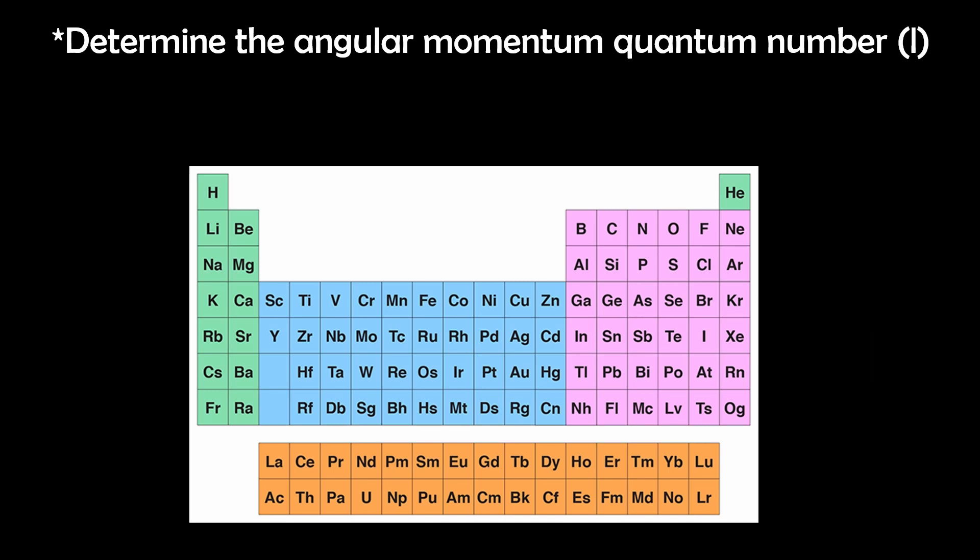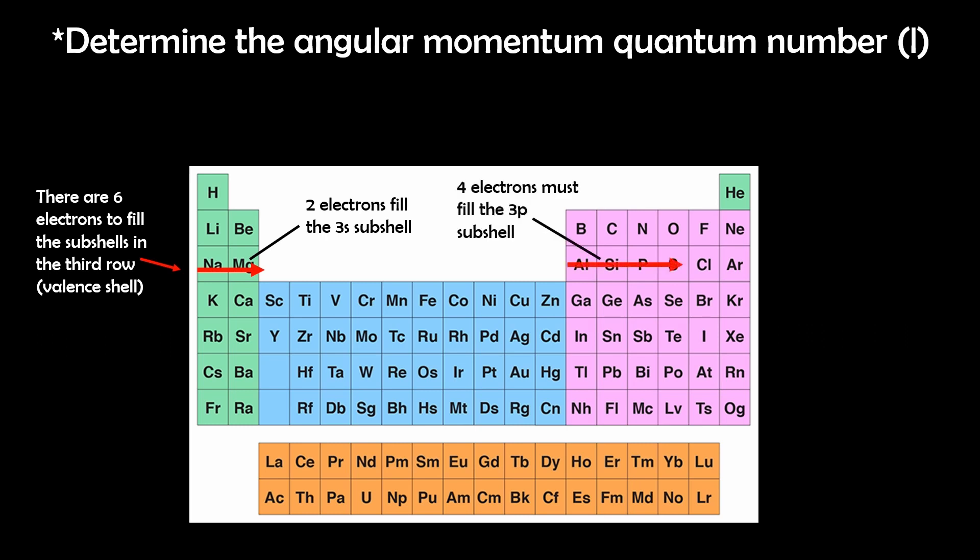Next, we determine its angular momentum quantum number L. We can see two electrons occupy the 3s subshell, therefore four remaining electrons must occupy the 3p subshell.